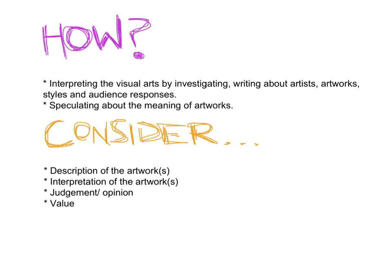So how does an art critic do this? Well, they interpret the visual arts by investigating and writing about artworks, artists, styles and audience responses — and this is happening over time. By doing that they are also speculating about the meaning of the work. Because they have such an understanding of art history and the way audiences have responded to work, and such knowledge about different styles within the art world, they use that to support their argument.